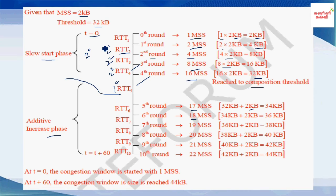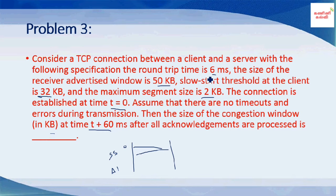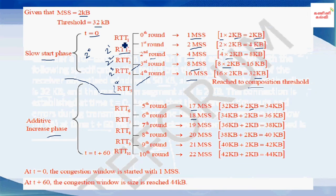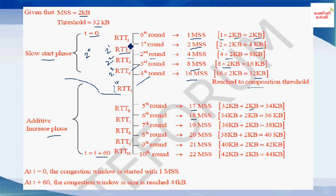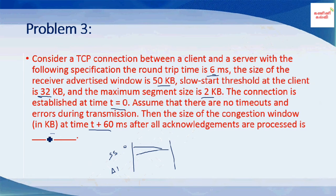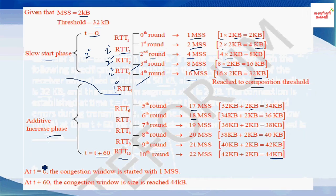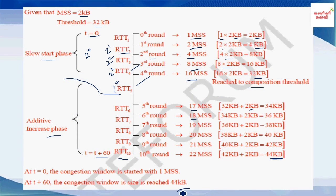The round trip time is 6 milliseconds. Counting from round 1 at 6ms, adding 6ms each time gives round 10 at 60ms. At time 60ms (the 10th round trip time), the congestion window size is 44 KB. So the answer is 44 KB.